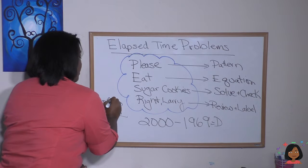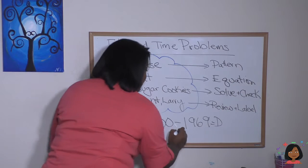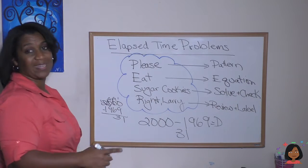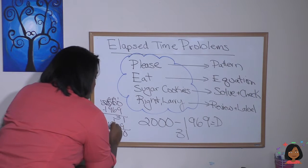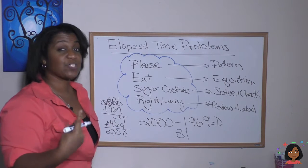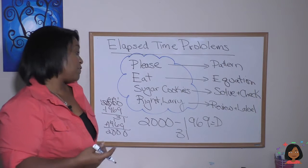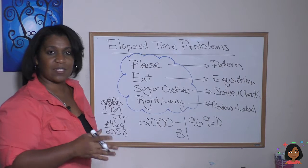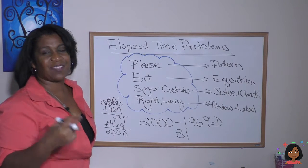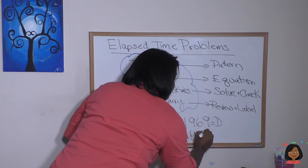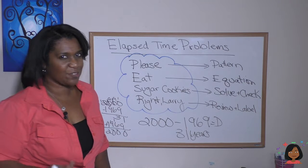A whole lot of borrowing here. 31 years was the difference, and we check it by adding 31 to 1969. That checks out. Now let's review and label. Does it sound about right that there are 31 years in between those dates? For me it does. Yeah, 2000, 1969, yeah, it's about 30 years, 31 years. And what's the label? 31 years, that simple.